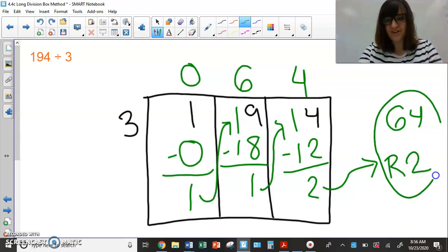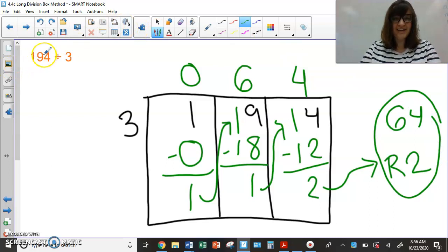So my answer to 194 divided by three is 64 remainder two. I didn't write the zero in the front because that's just a placeholder. You don't need that with your final answer. All right, guys. Thanks so much for listening. Happy practicing.